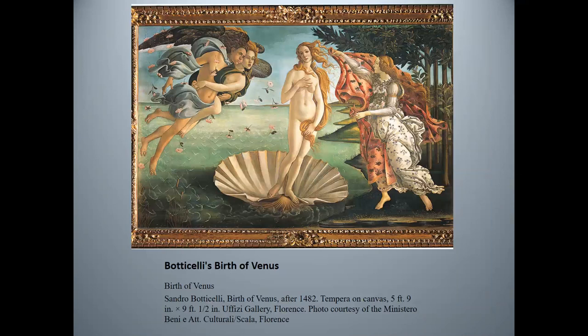Sandro Botticelli brought back themes from classical mythology in his work Birth of Venus. Venus, or Aphrodite to the Greeks, was the goddess of love and beauty. In this painting, she is shown floating up to shore on a shell. According to Greek mythology, Aphrodite was born from the sea foam after Kronos castrated his father, the sky god Uranus.